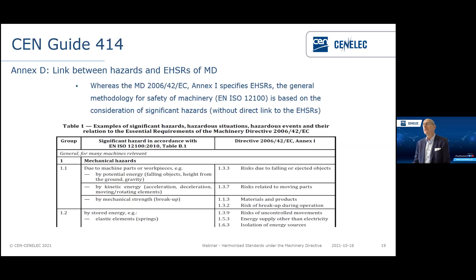CEN Guide 414 initially contained an Annex D where significant hazards were listed in a table. A tool was created where these significant hazards were linked to the essential requirements of the machinery directive. Using this tool, it is possible to develop an initial detailed Annex ZA. If you have a good list of significant hazards, you can have a good initial Annex ZA — but a well-developed list of significant hazards is the prerequisite for using this tool.